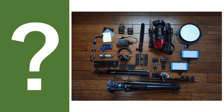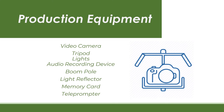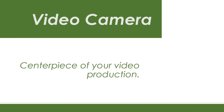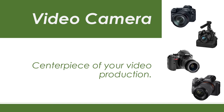And we are down to production equipment. These are some of the basic equipment that you may need in video recording: video camera, tripod, lights, audio recording device, boom pole, light reflector, memory card, and teleprompter. If you lack some of this mentioned equipment, it's okay — I will teach you some tips on how to be more creative in utilizing available resources. Camera is partly responsible for the quality of our video output; the more expensive the camera is, the better function and quality of video it usually gives.